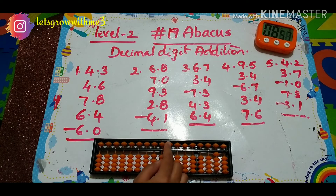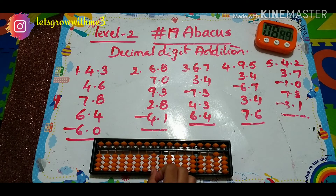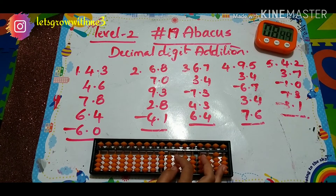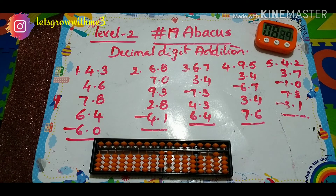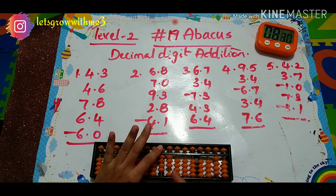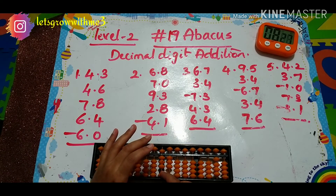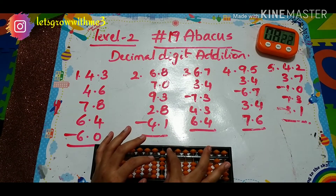Now let's solve a few problems so that your concepts will be clear. So 4.3 — I'm taking 4 on one space and my house point I'll take as the decimal point. Next, 3 I will represent on the right side. So 4.3 is set. Next I must add 4.6 — so 4 I should add in one space. To add 4 I am taking the help of the 5 plus 5 minus 1 small friend formula. Next I must add plus 6, so I can add that directly.